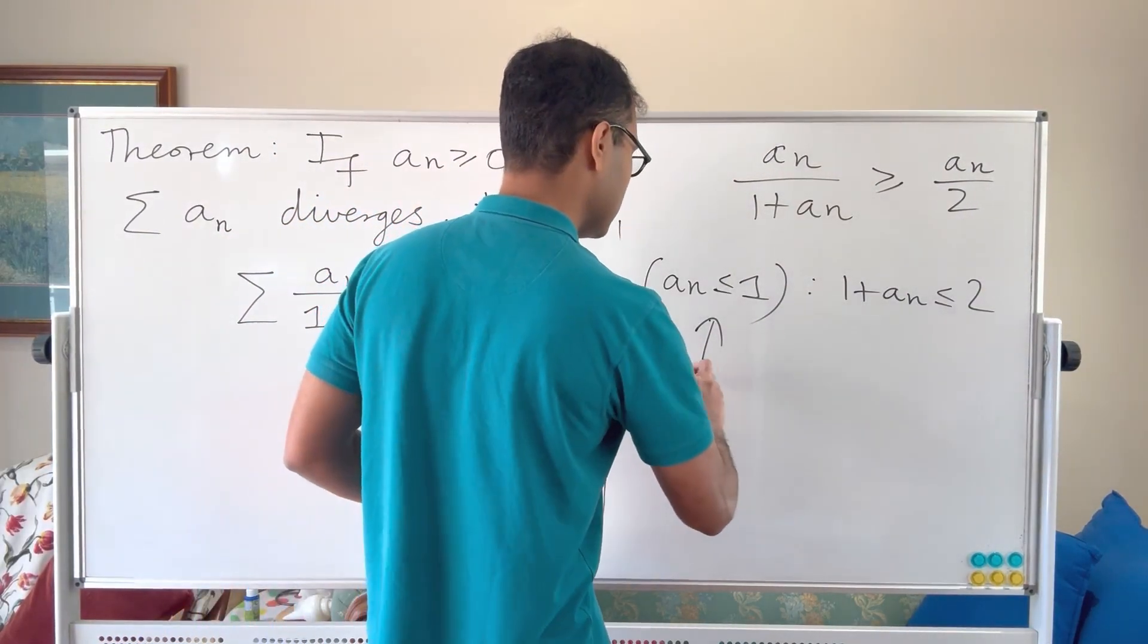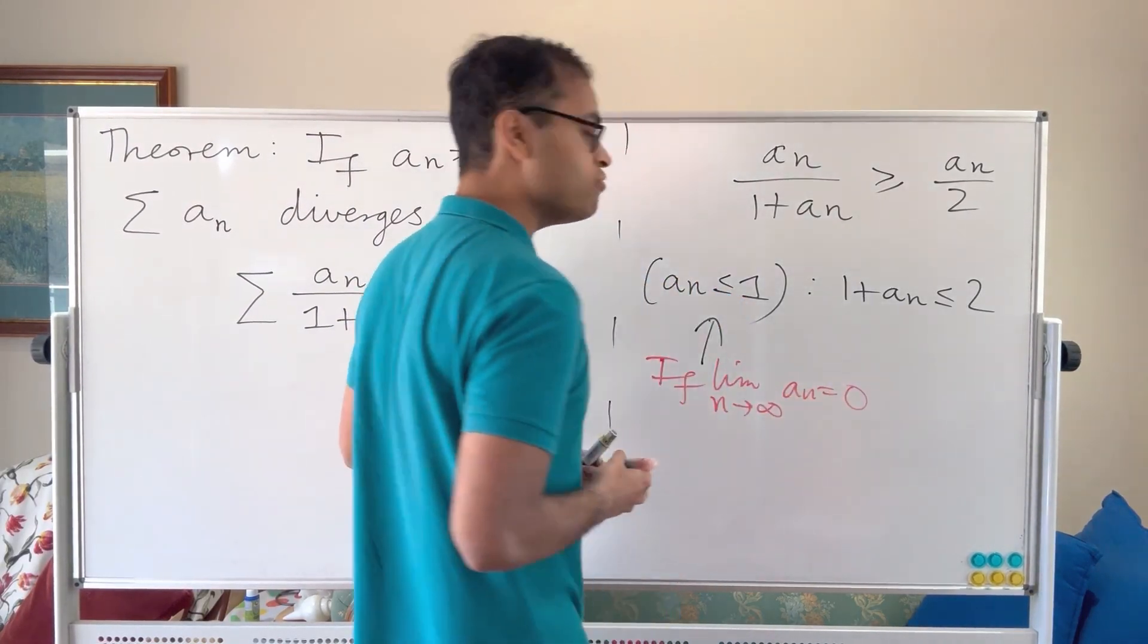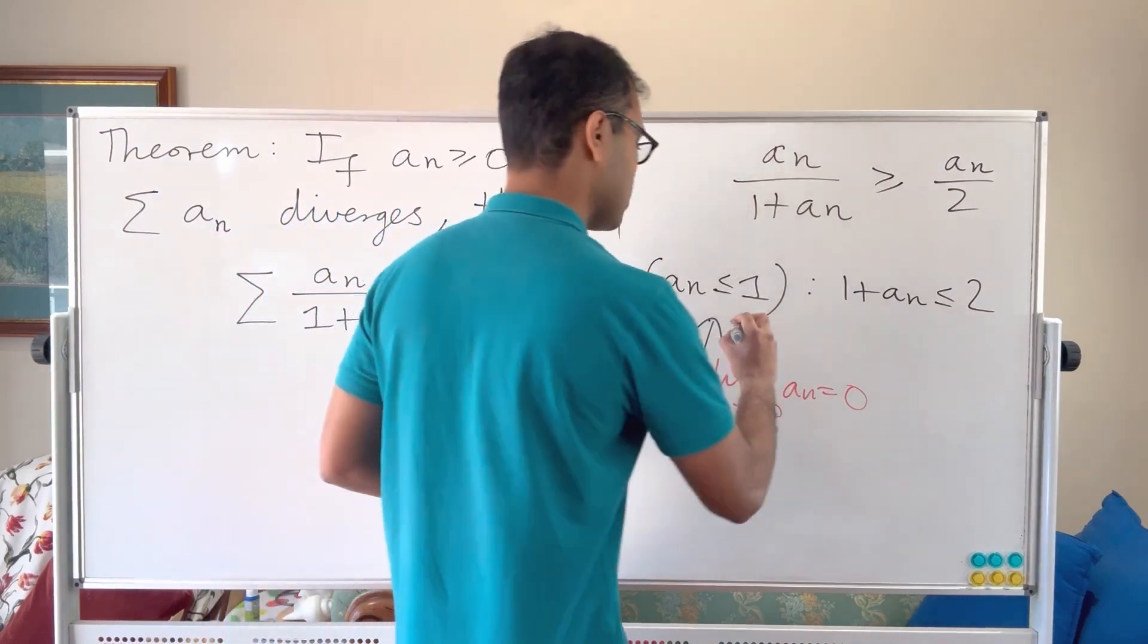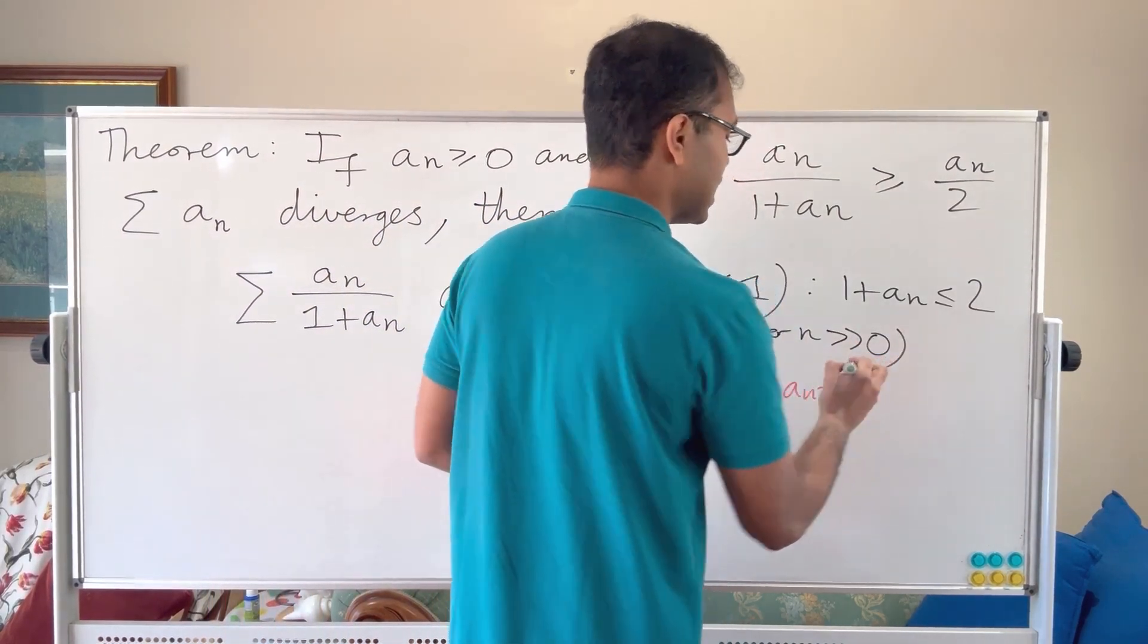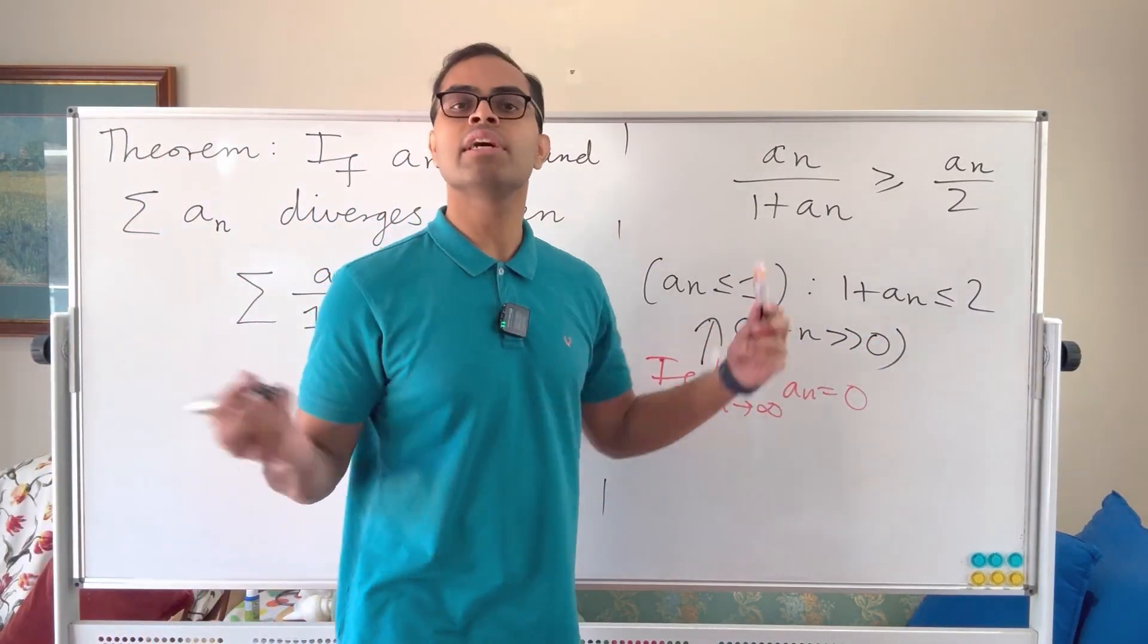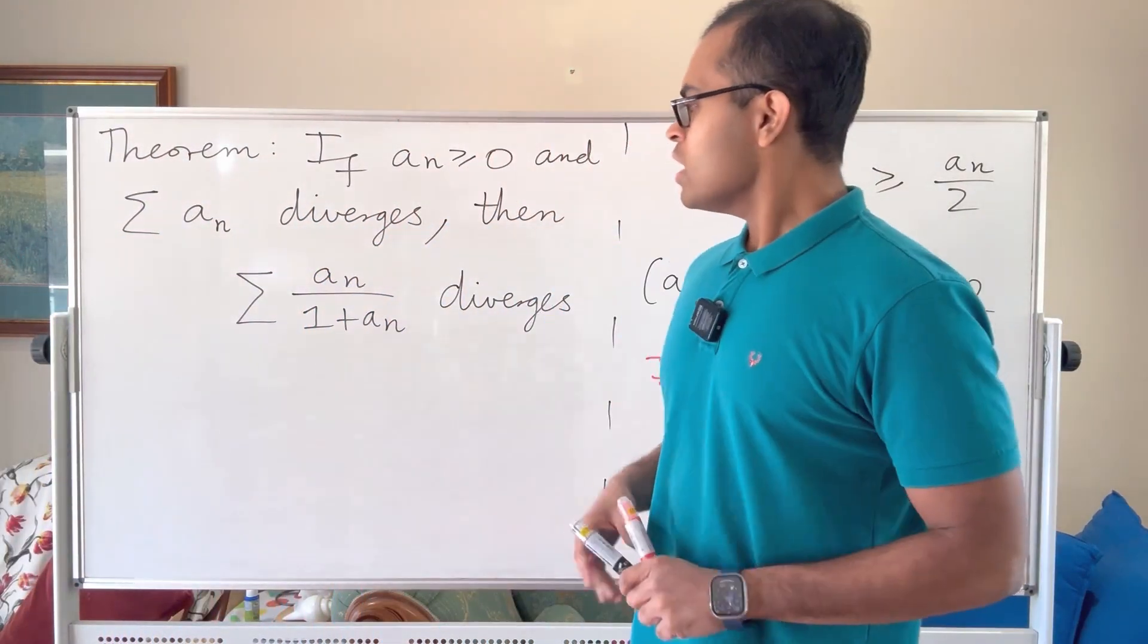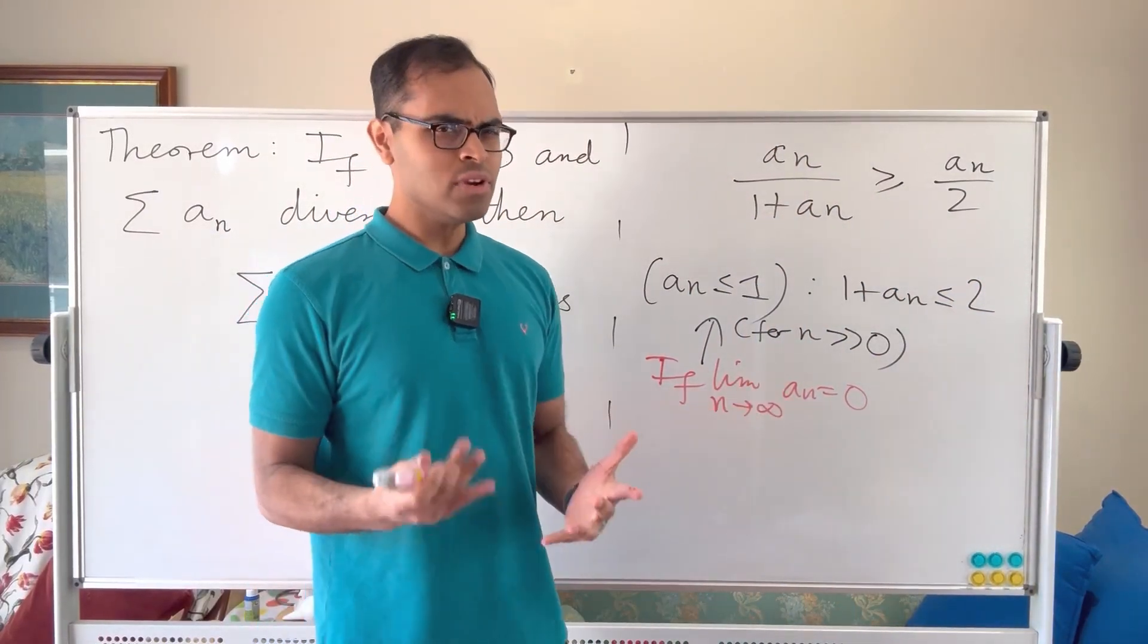If limit n goes to infinity of an is 0, then you know that this is true for all sufficiently large n. Sometimes in analysis they use a double greater sign to say n sufficiently large. So how do we actually know though that the limit of an is equal to 0? We don't really know that.